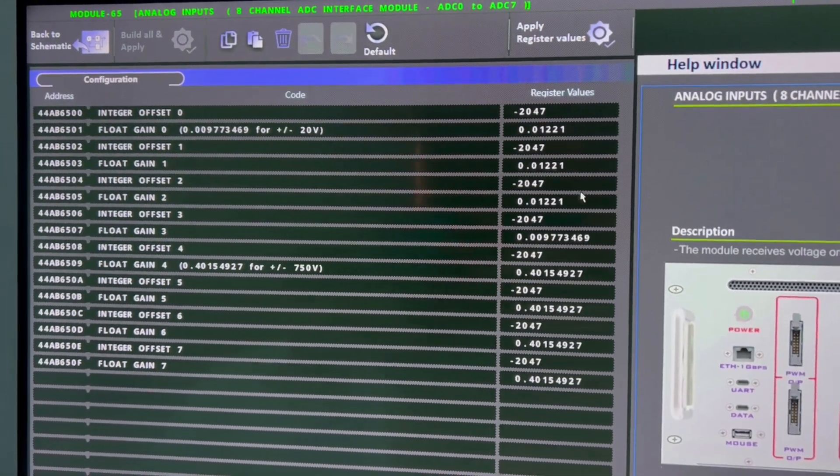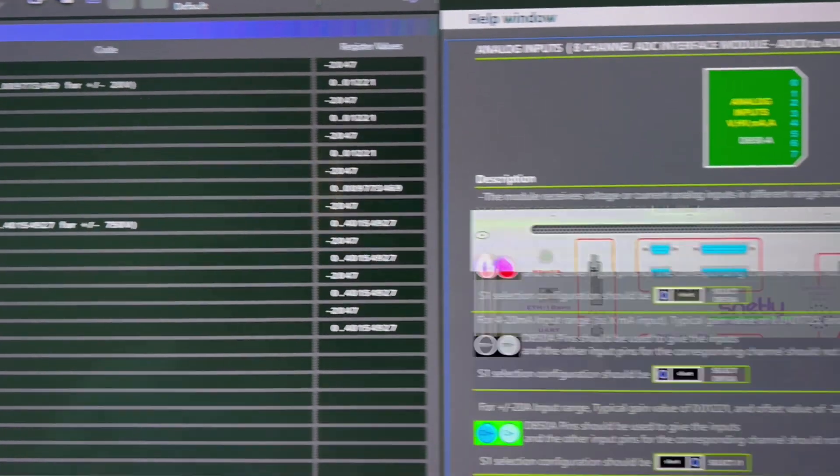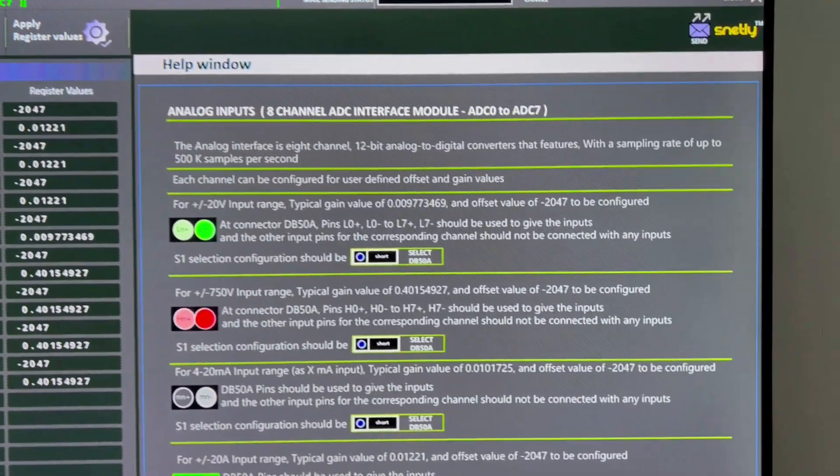Here we are using 3 current measurement, and in the end we have the typical gain value as well as offset values.